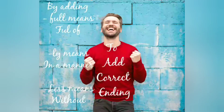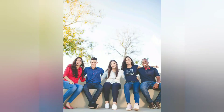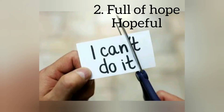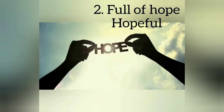So the next section is to add the correct ending. The ending '-full' means full of, and '-ly' means in a manner. So the first one — full of joy — means Joyful. Without stands for '-less.' Full of hope — Hopeful.